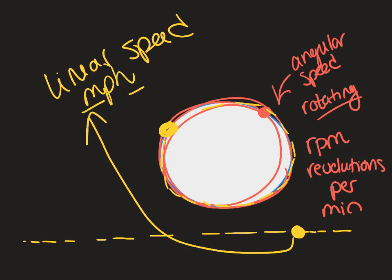So linear speed is like your miles per hour. So it's a distance over a time, whereas with angular speed, it's some kind of measure of an angle. Revolutions, radians, degrees per unit of time. So on page five, we're going to talk about some formulas.